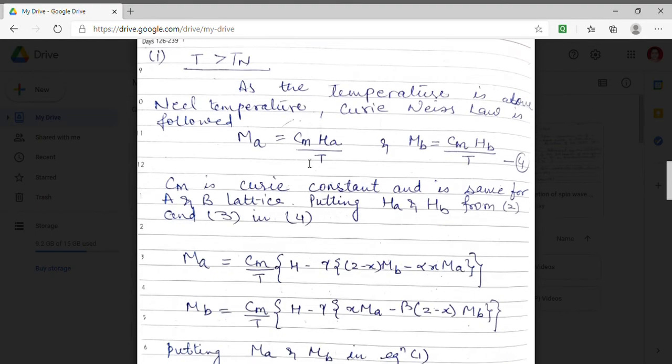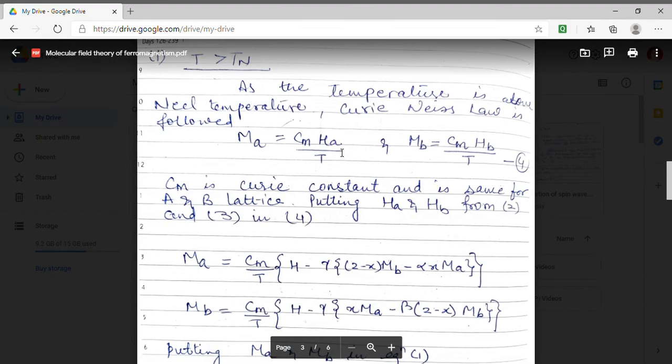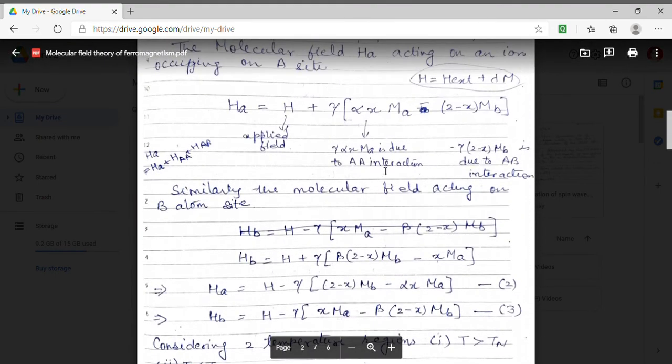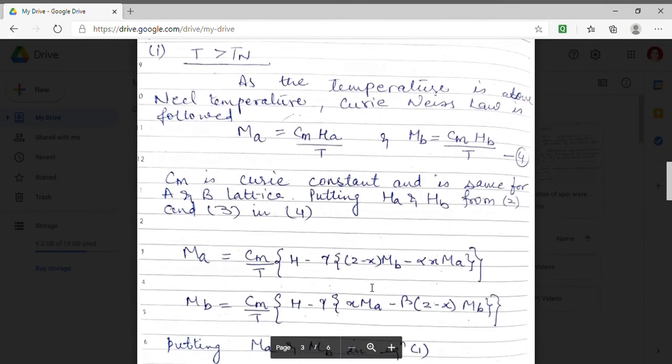So we have already obtained the value of HA and HB. These are the expression of HA and HB. Substituting the values of HA and HB so obtained in the expression of MA and MB.